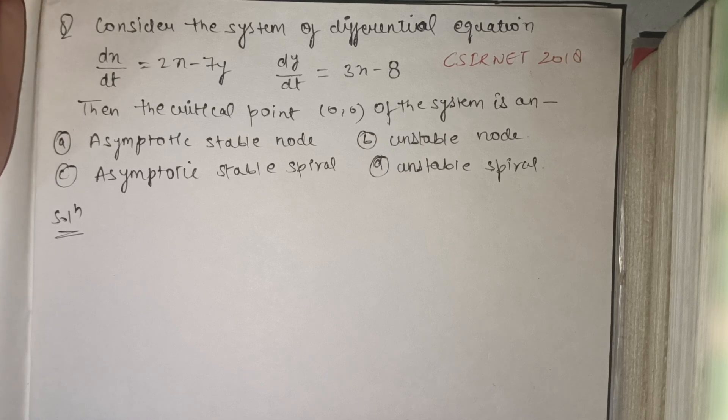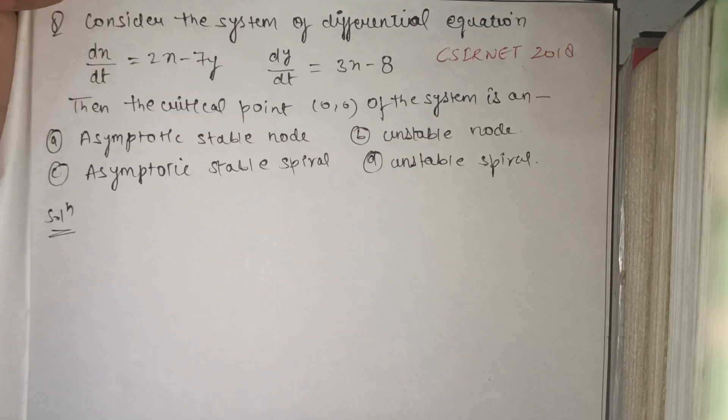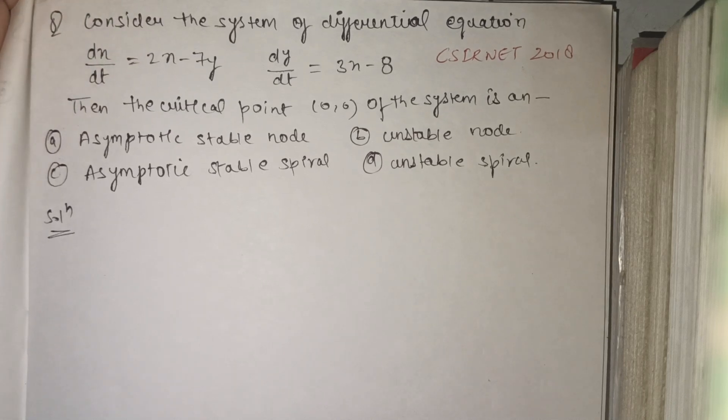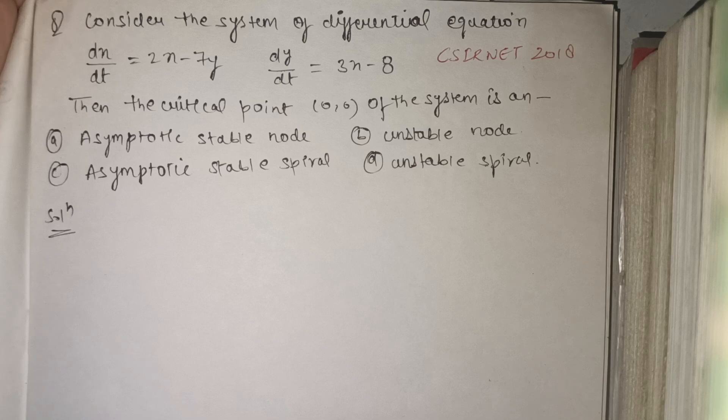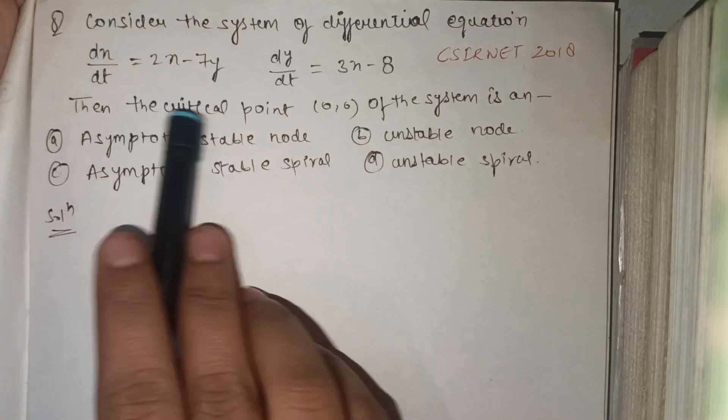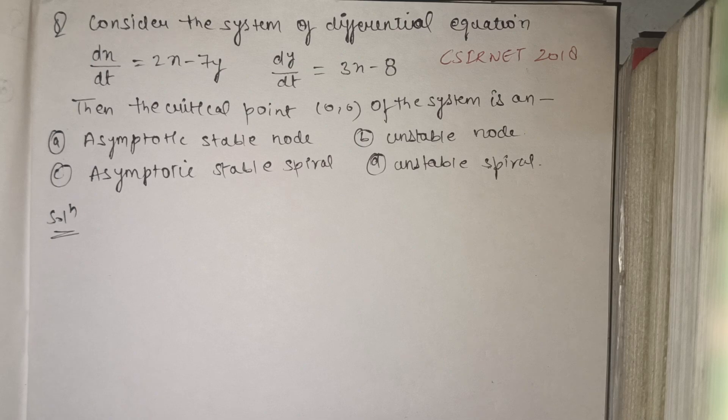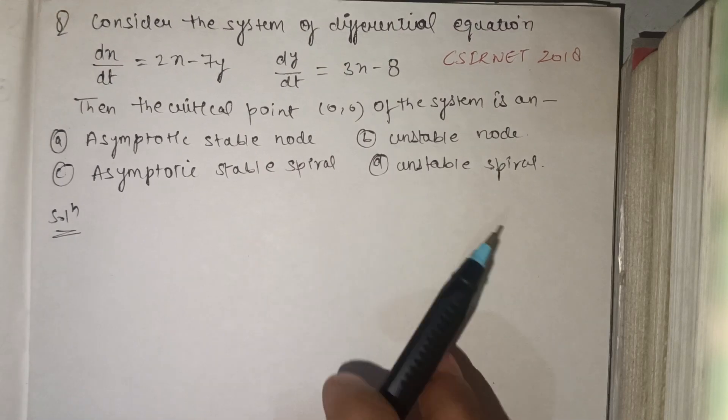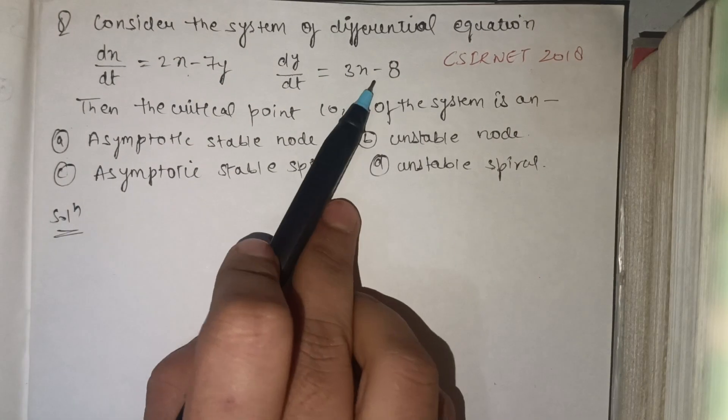This question was asked in CSIR NET 2018. Consider the system of differential equations. Then the critical point (0,0) of the system is... These are the options. So this is a system of differential equations.